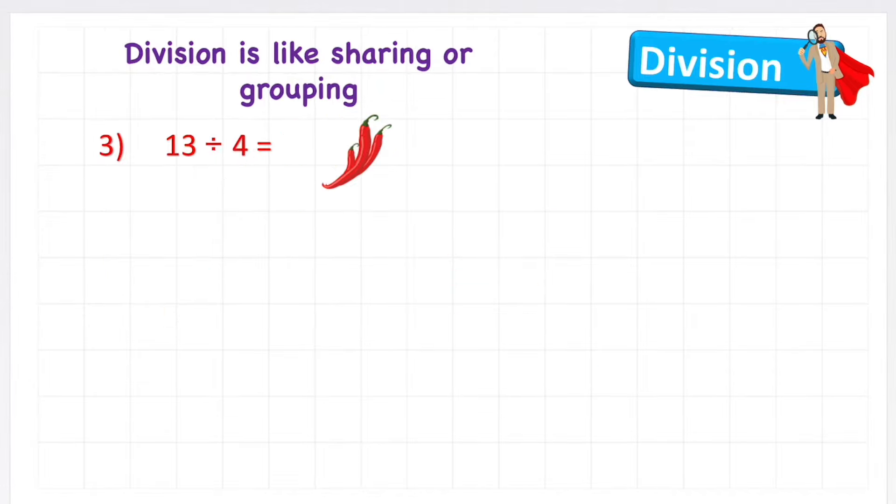So again, 18 divided by 3 is 6. Same answer, just a different method. Okay, lastly, I want to show you something that can happen a bit interesting with division. Here we go. I've got 13 divided by 4. So I'm going to share them. First of all, I'm going to have my four sharing circles. One, two, three, four.